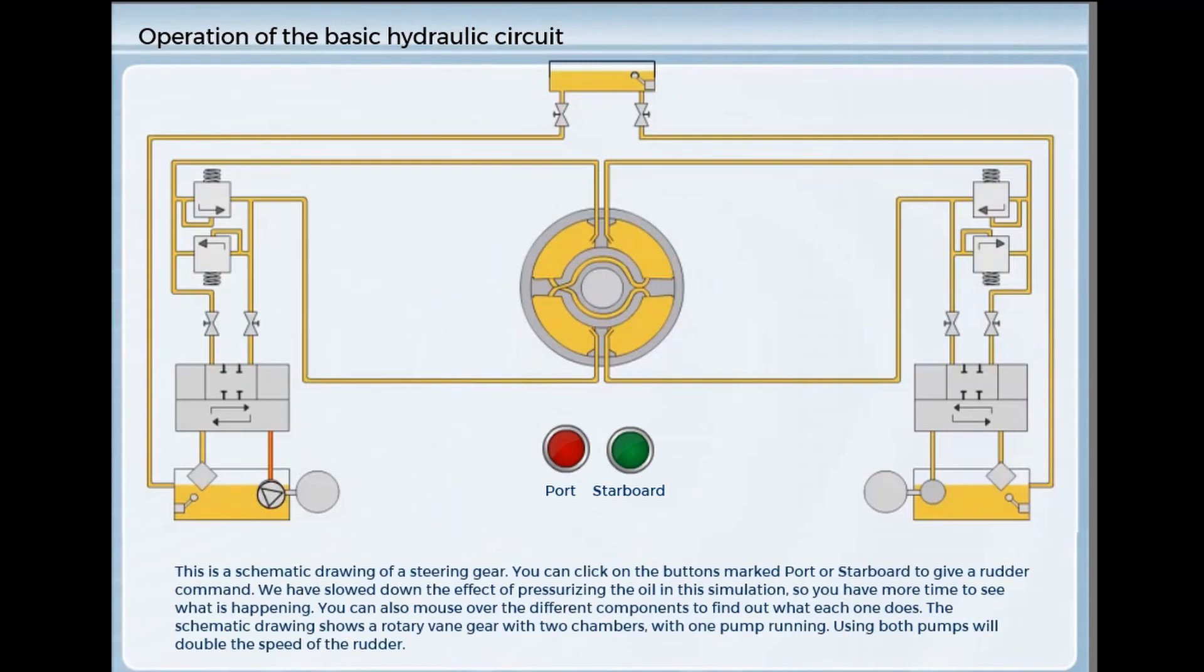This is a schematic drawing of a steering gear. You can click on the buttons marked port or starboard to give a rudder command. We have slowed down the effect of pressurizing the oil in this simulation so you have more time to see what is happening. You can also mouse over the different components to find out what each one does. The schematic drawing shows a rotary vane gear with two chambers with one pump running. Using both pumps will double the speed of the rudder.